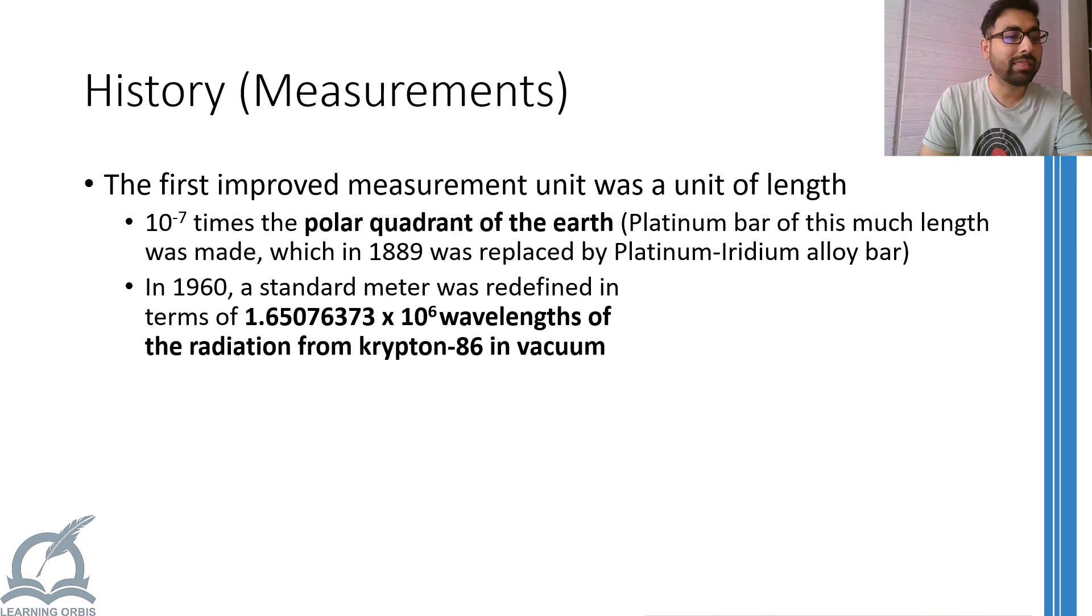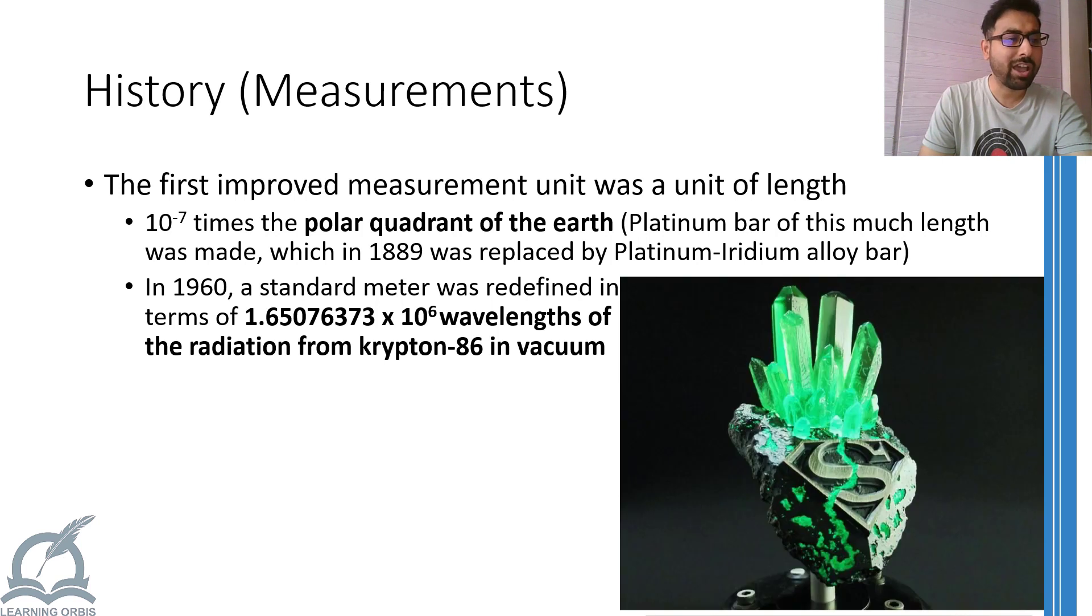This was the reason that in 1960, a unit meter length was redefined as 1.65 or something into 10 raised to power 6 wavelengths of the radiations emitted by Krypton-86 element in a vacuum. Maybe this was the year when Superman fell from the sky and we came to know about the Kryptonite.